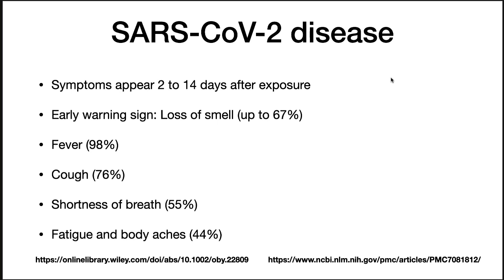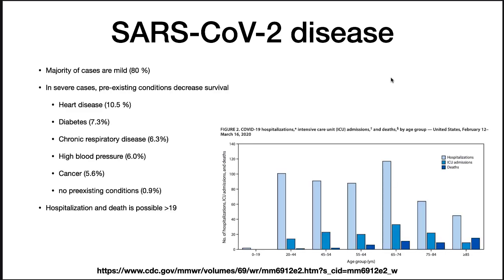It's not yet clear how many of these eventually go on to show symptoms and how many recover and never know they had the disease. The majority of cases of SARS-CoV-2 are mild, with 80% never progressing to severe illness. In severe cases, pre-existing conditions decrease survival. The CDC examined data from reports of 2,449 patients; of these, 508 required hospitalization. The rate of hospitalization is significant for all age groups above 20.